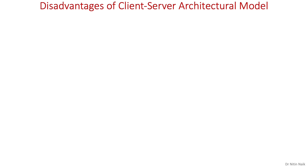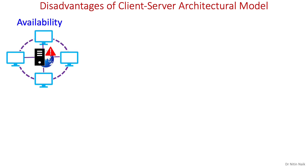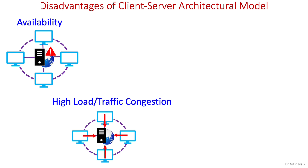Now let's look at the disadvantages of the client-server architecture model. Firstly, availability — the server must be online and available to clients at all times or the application simply will not work. Many things can impact server availability, from hardware failures, software problems, or operating system errors. Secondly, high load or traffic congestion is another recurring problem due to high load or unexpected demand on the server — if too many clients make requests from the same server, it will result in crashes or slowing down the connection.